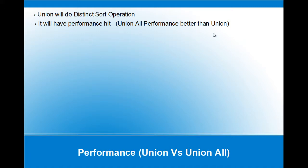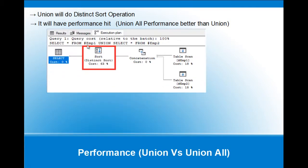UNION ALL performs better than UNION. If you have two tables with larger data sets, UNION will not perform as well. In the execution plan you can see that a distinct sort operation is performed, which is a costly operation.